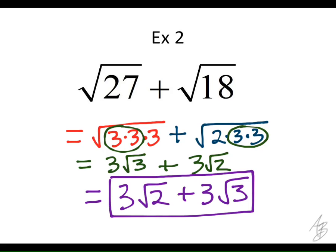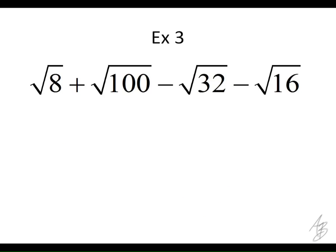These two square roots we cannot add together, but if I'm asking you to simplify, you still have to simplify each one by itself. So we couldn't add them because they weren't alike when we started, but we went ahead and simplified them and wrote it in simplest form. Any questions about that one? Alright, let's do another one. That one looks tough. So I'm asking you to simplify this expression.